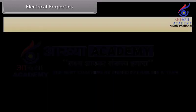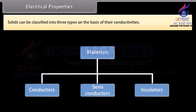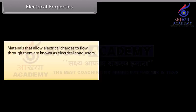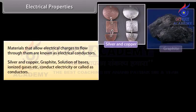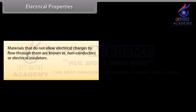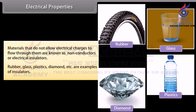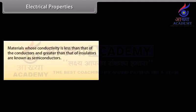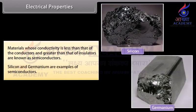Electrical properties: Solids can be classified into three types based on their conductivities. Conductors allow electrical charges to flow through them — examples include silver, copper, graphite, solutions of bases, and ionized gases. Insulators do not allow electrical charges to flow — examples include rubber, glass, plastics, and diamond. Semiconductors have conductivity less than conductors but greater than insulators; silicon and germanium are examples of semiconductors.